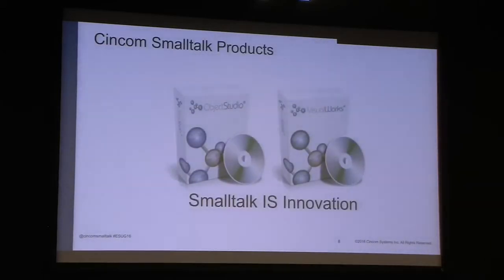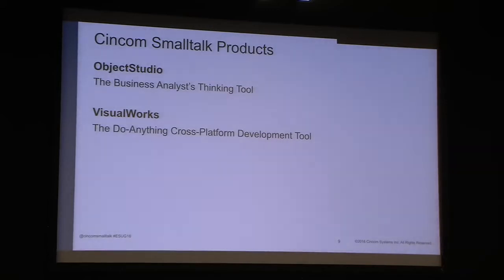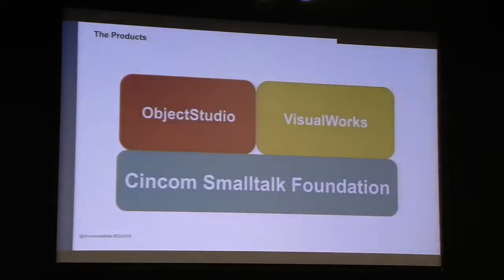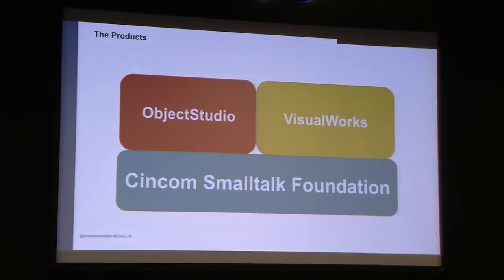Let's talk about the products. Our Object Studio and VisualWorks products are two Smalltalk products. Object Studio we think of as the business analyst thinking tool — you can take a developer, an architect, a domain expert, sit them down, and they can use the tools in Object Studio to be very productive. It's a different set of tools and means of development. Object Studio is also Windows-centric. VisualWorks is cross-platform — the do-anything cross-platform scientific or business purposes development tool. Both products share a foundation, so most of the things I talk about today are changes to the foundation shared by both products.